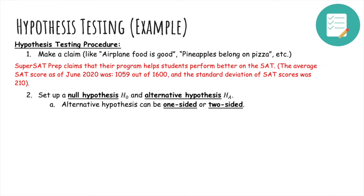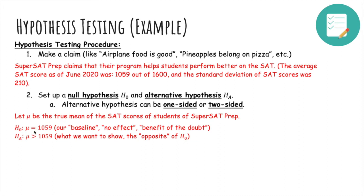So we'll set up a null hypothesis and an alternative hypothesis next. Let μ be the true mean of SAT scores of students of SuperSAT Prep. Then our null hypothesis H₀ will be that μ is equal to 1059, because it's our baseline or no effect or benefit of the doubt. So we're going to assume that the true mean of the scores is the same as the nationwide mean of 1059. And our alternative is what we want to show, which is that SuperSAT Prep is good, and that test takers are better off for it. So we're going to assert that μ is greater than 1059.